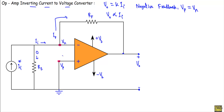This terminal is directly grounded, so VP is equal to 0. As VP equals 0 volt, VN will also equal 0. So VP equal to VN equal to 0 volt. This is called an inverting current-to-voltage converter circuit because we are connecting the current source at the inverting terminal.